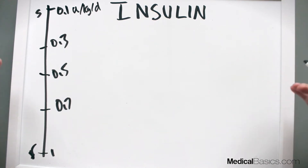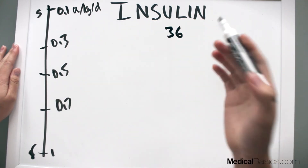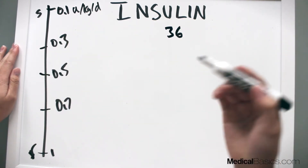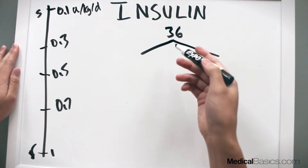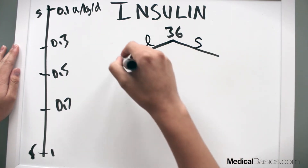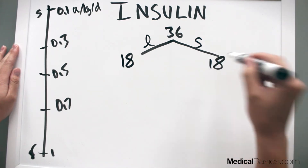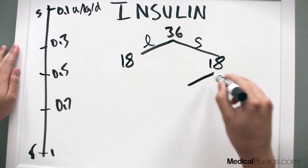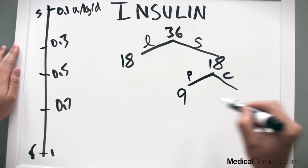Let's say we did our calculation and got 36 units of insulin — that's their 24-hour insulin requirement covering both long-acting and short-acting. We divide this in two: 18 units of long-acting insulin like glargine, and 18 units of short-acting insulin. The short-acting is then further broken down — nine units of prandial and nine units of correctional insulin.